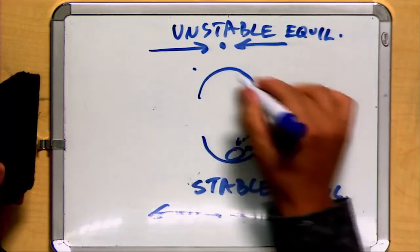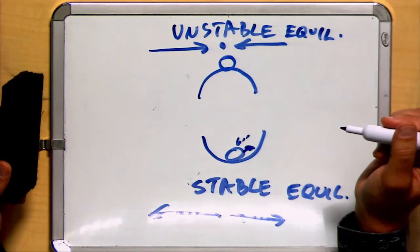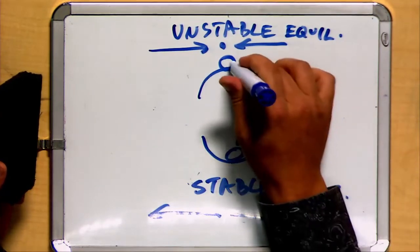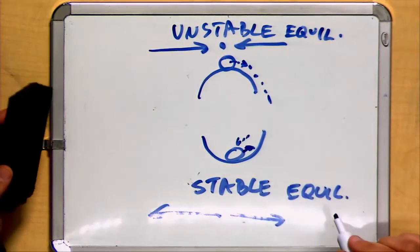On the other hand, if I balance a marble on top of a bowl, and I'm very careful, I can balance it and have it in equilibrium, but the slightest nudge will tend to plummeting off the side of the bowl, and it will not be returned to its equilibrium state.